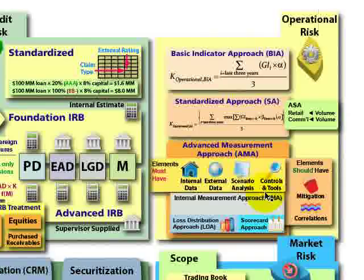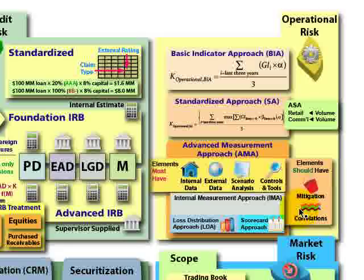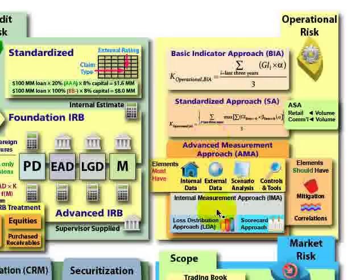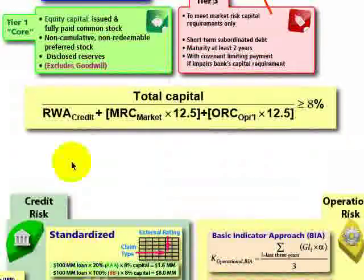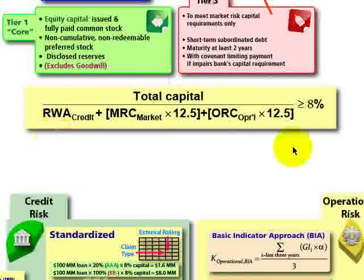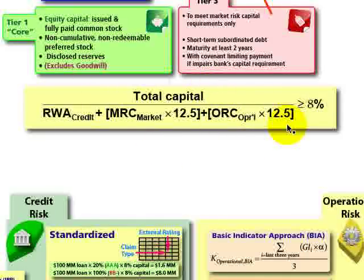Still within Pillar 1 — the denominator of that 8% ratio — operational risk has been added most recently. There are at least three basic approaches under operational risk: basic, standardized, and then a more fluid set of advanced measurement approaches. Those are the three risk buckets that set the rules for the denominator, and we need eligible capital held against all three.